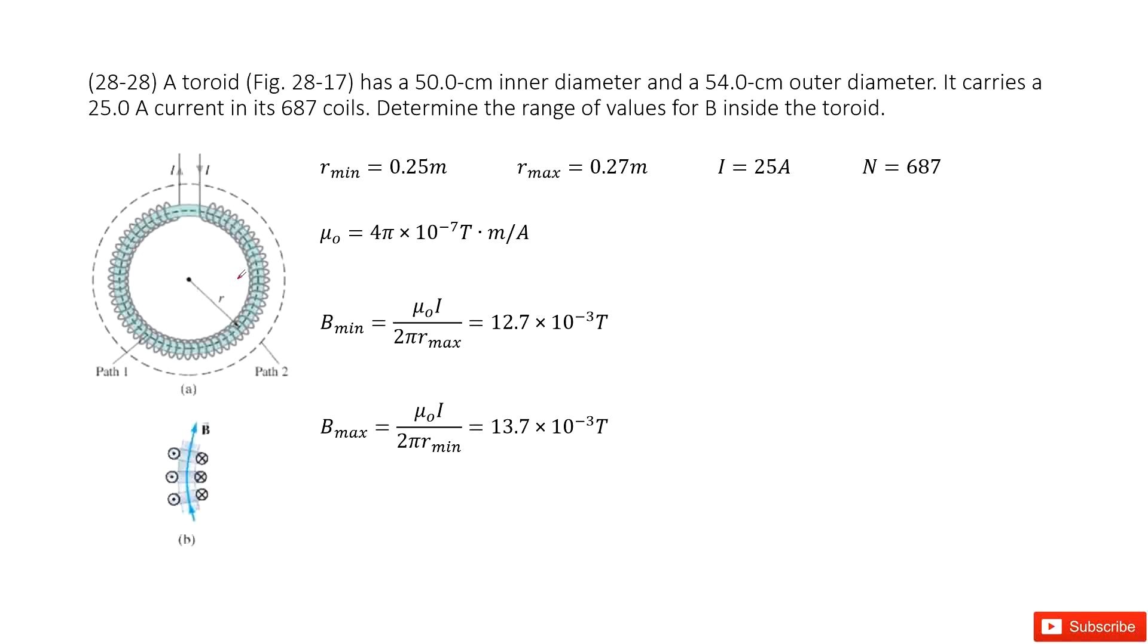We have this toroid, right? And we know the inner diameters and outer diameters. Now we know the current and how many turns for this toroid. It asks you about the magnetic fields at the center, right, the range. So now we list all the given quantities.